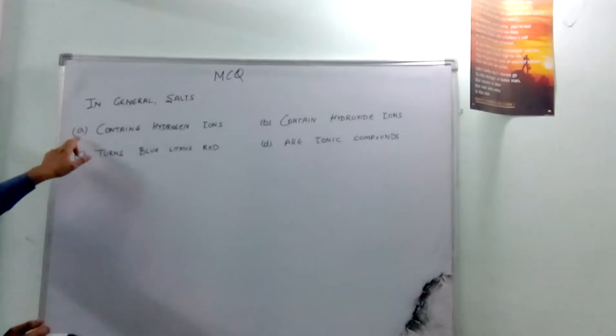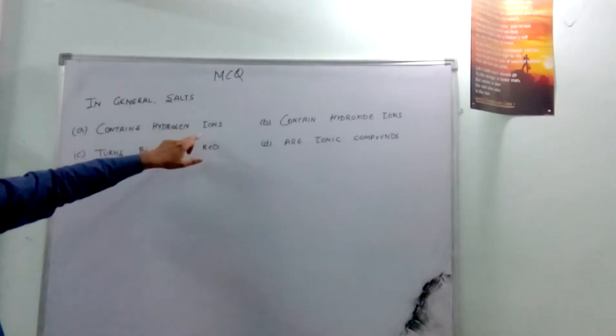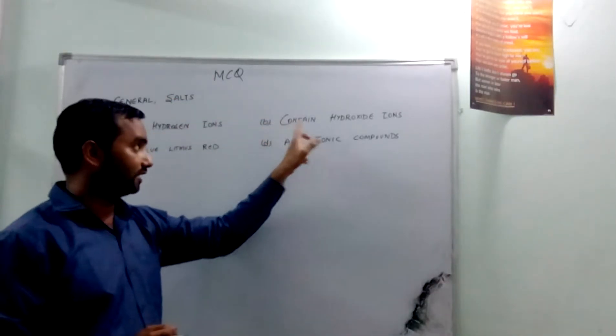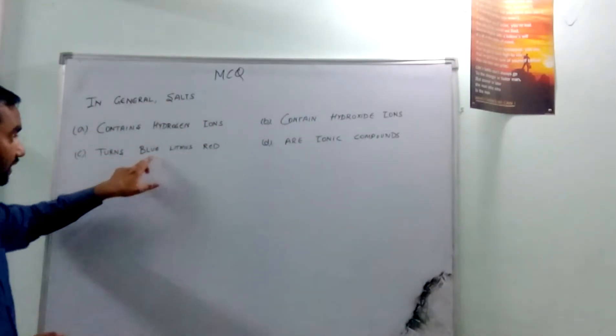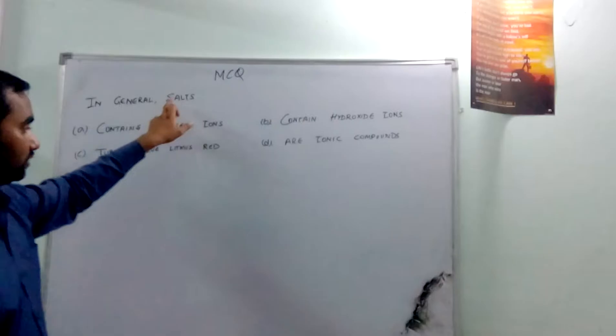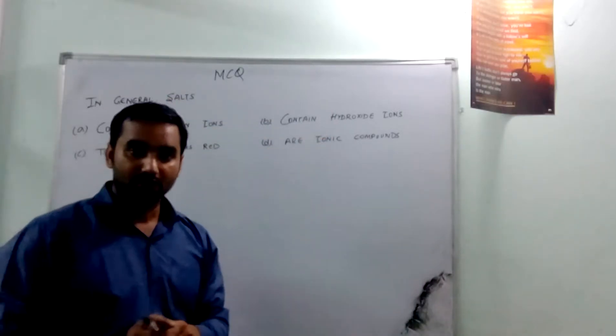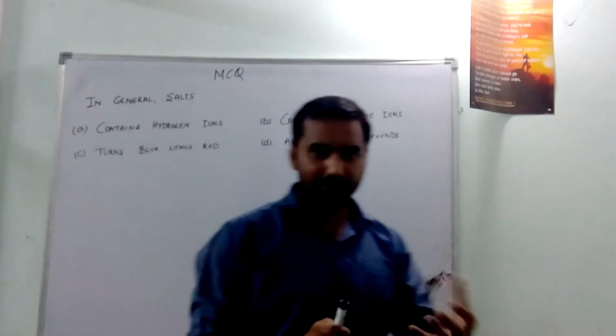The first option is salt contains hydrogen ion. The second is salt contains hydroxide ion. The third is salt turns blue litmus red, or salt are ionic compounds. So I know that it's a very common question.